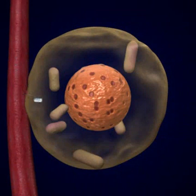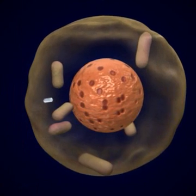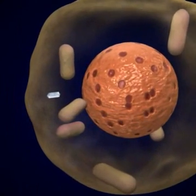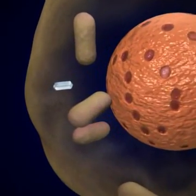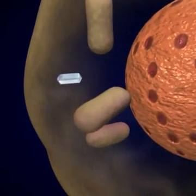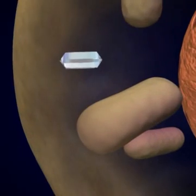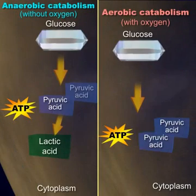We use glucose as fuel for the body. Glucose provides energy in the form of ATP so that cells can perform their function. In order for this to occur, glucose must undergo catabolism.